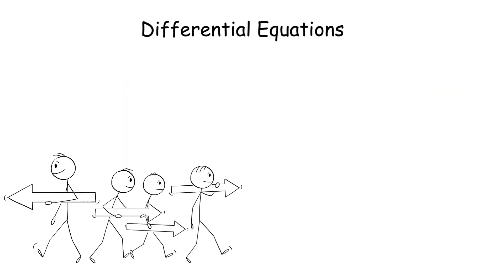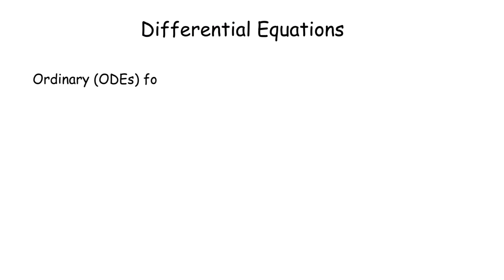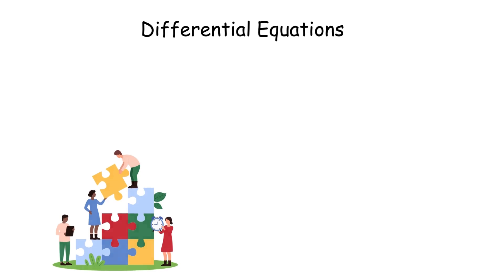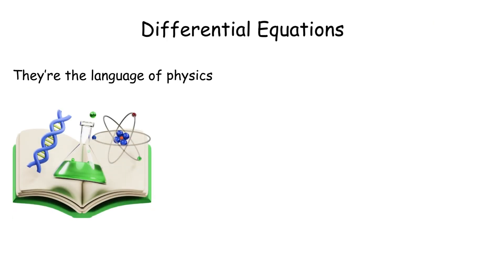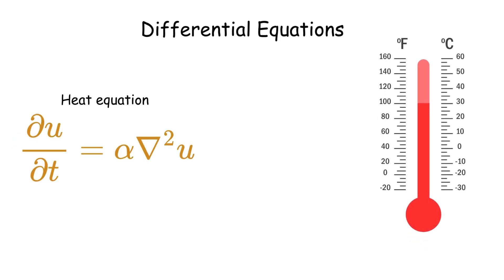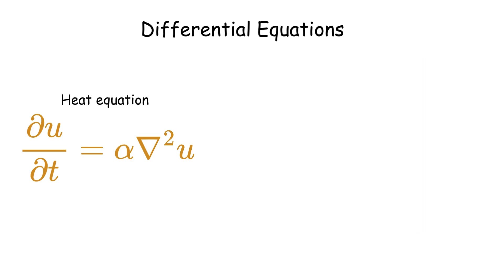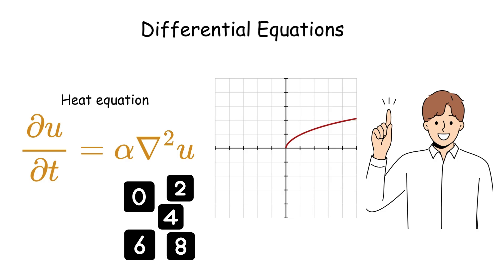Differential equations describe how things change, from planets orbiting to heat spreading. Originating with Newton and Leibniz, they come in two flavors: ordinary ODEs for single variable systems, and partial PDEs for multivariable ones. Key concepts include existence and uniqueness theorems, stability, and boundary value problems. They're the language of physics, modeling everything from waves to quantum systems, and engineering, like circuit design. For example, the heat equation predicts how temperature evolves over time. Solving these equations often blends real, numerical, and functional analysis, making it a crossroads of mathematical ideas.